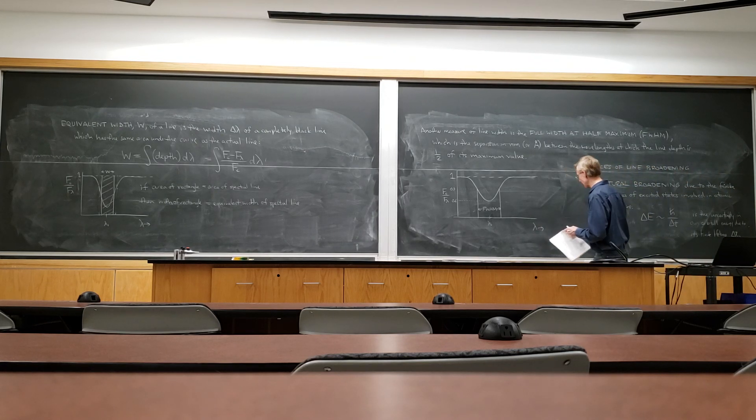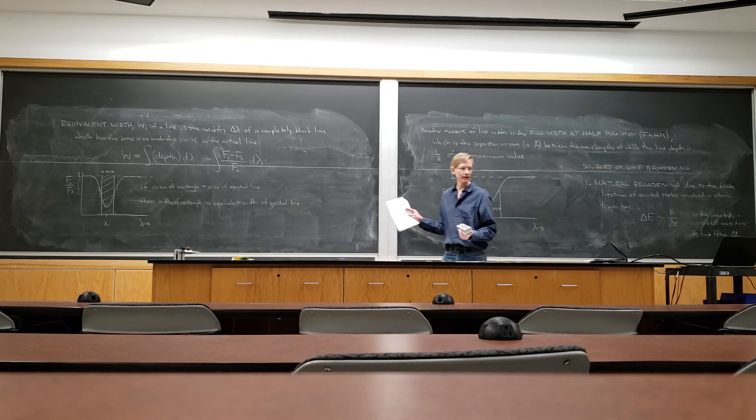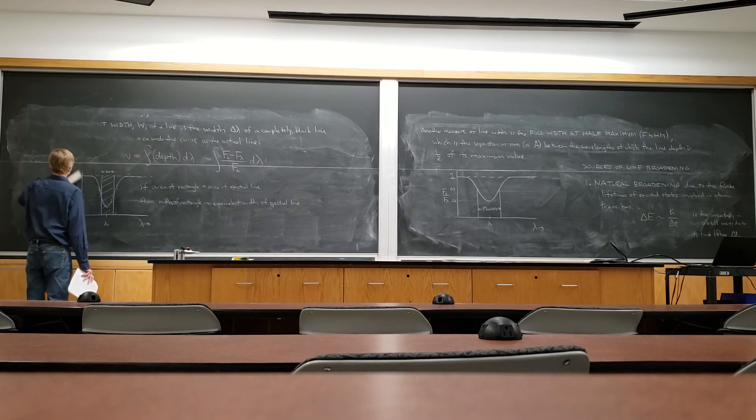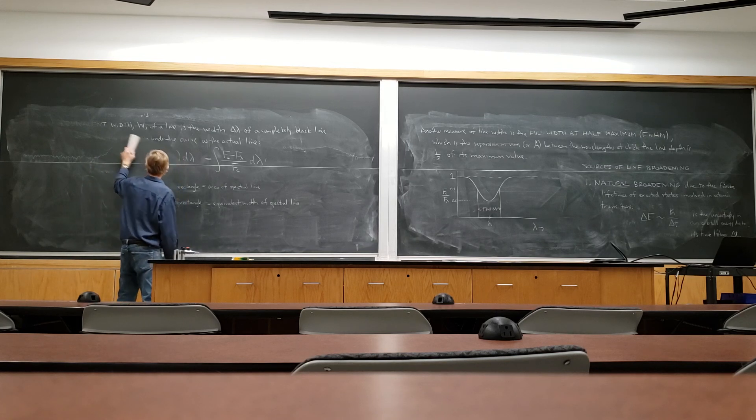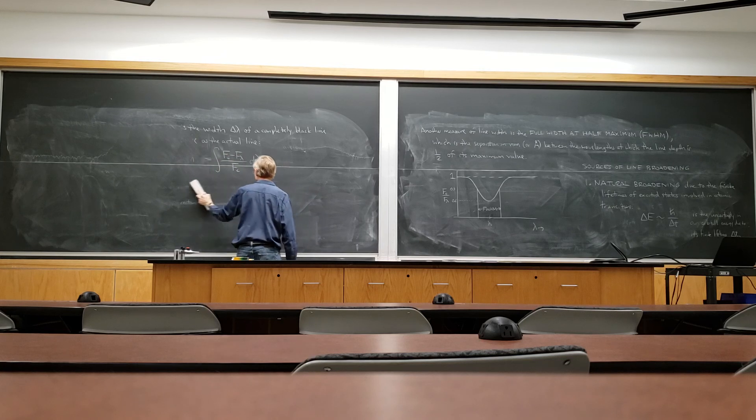So then that must mean that natural broadening is related to how long it stays alive. How long does it take, on average, if I have an electron in n equals 3, how long does it take on average before it drops into a lower energy level, either n equals 1 or n equals 2?